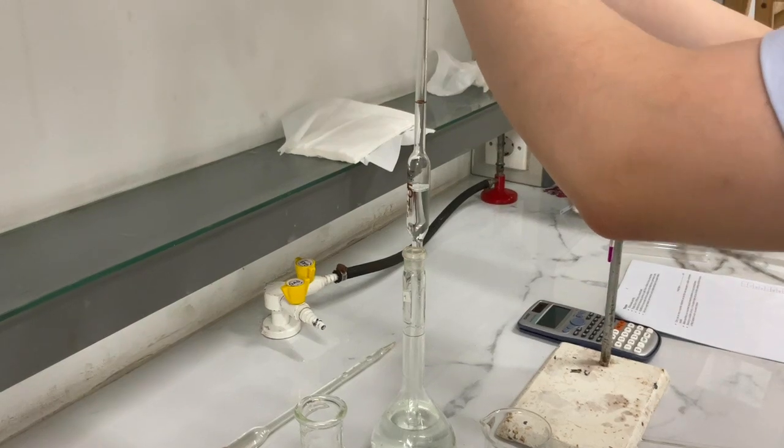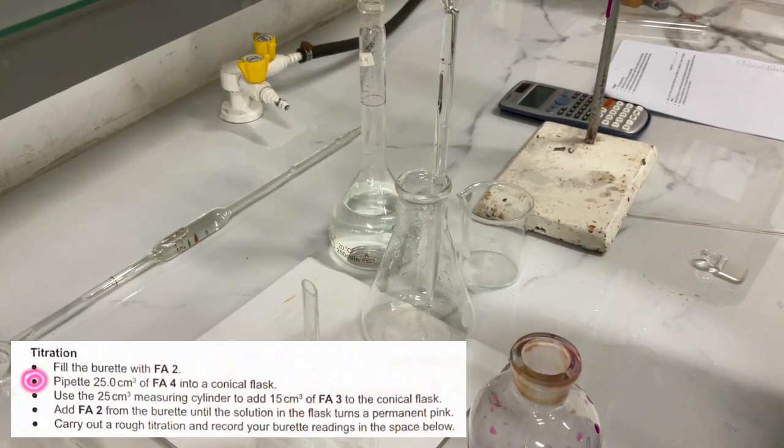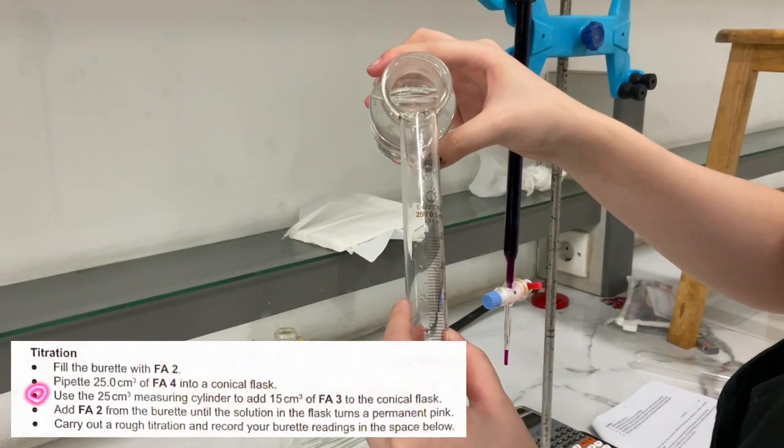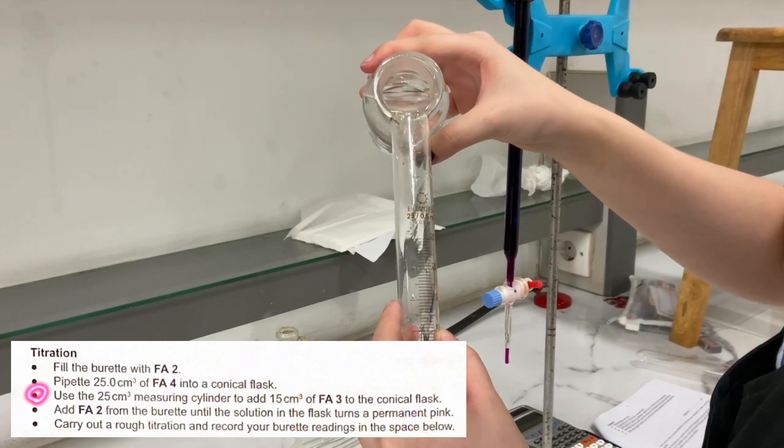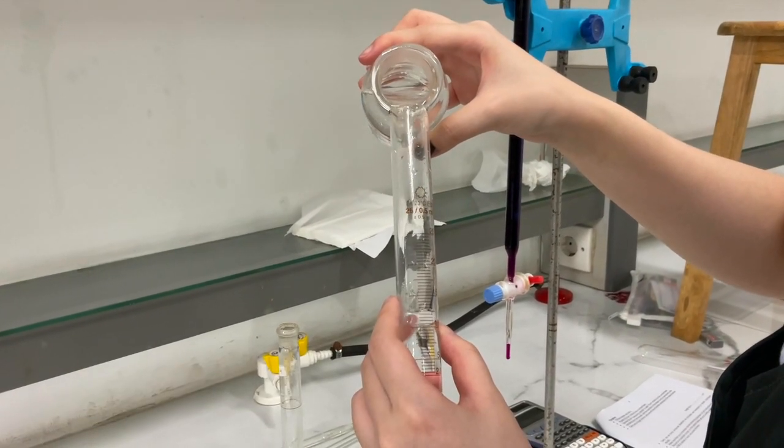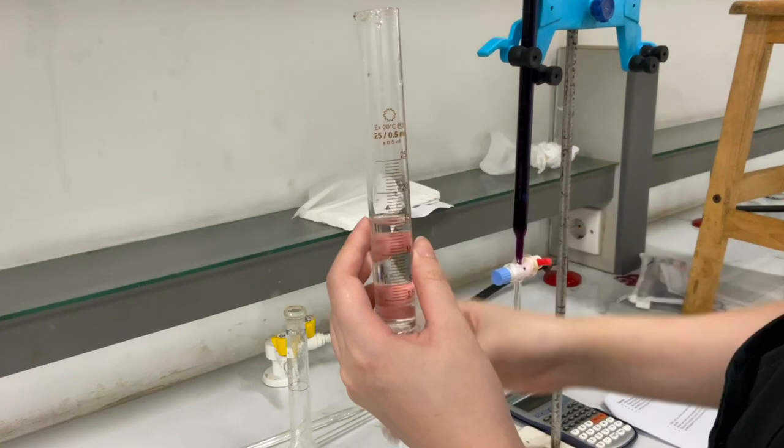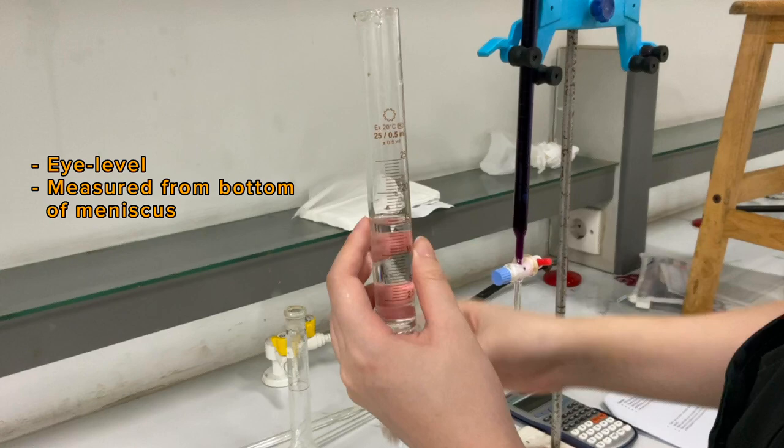Next, put 25 cm³ of FA4 into the conical flask. Then, use the 25 cm³ measuring cylinder to add 15 cm³ of FA3 into the conical flask. To get accurate results, the measuring cylinder should be viewed at eye level, and the bottom of the meniscus should be at the 15 cm³ mark.